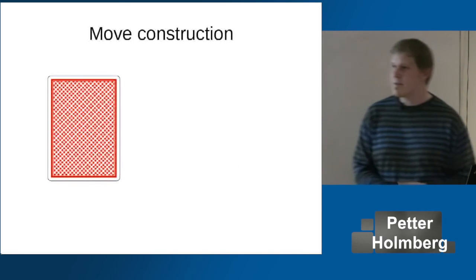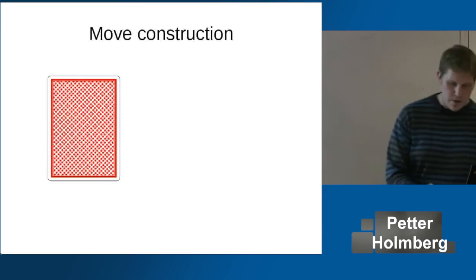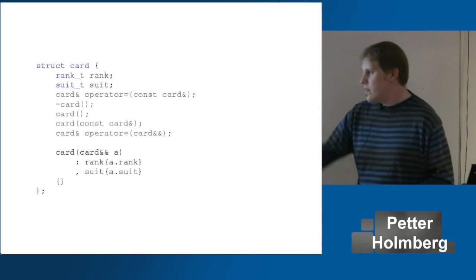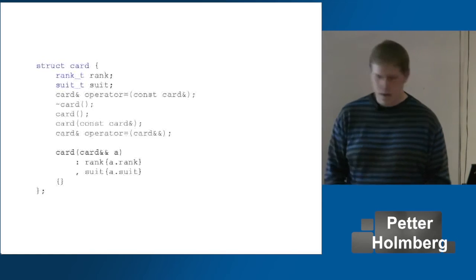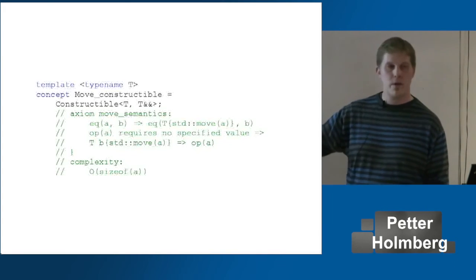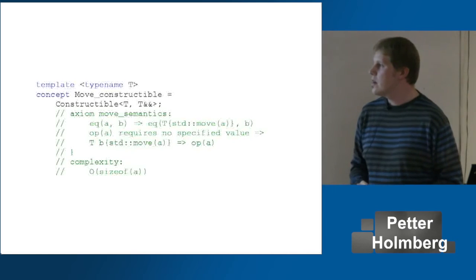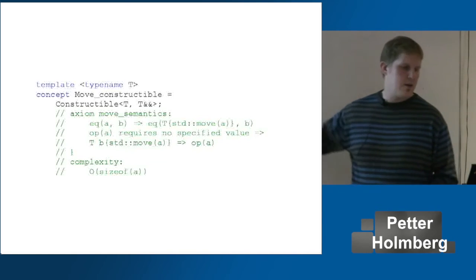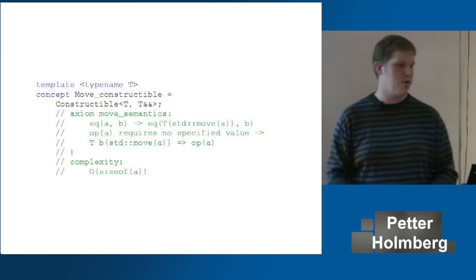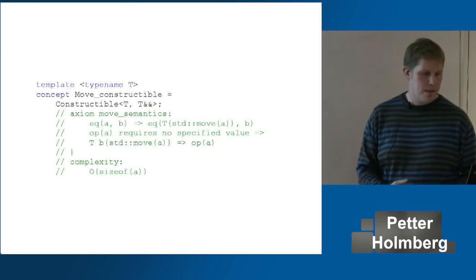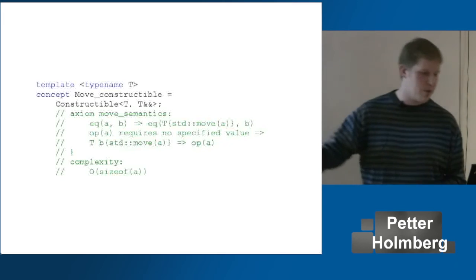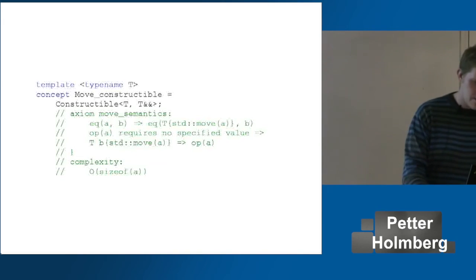So just one more left: the move constructor. Kind of the same as the copy constructor, except that we move instead of copy. In this case we just make a copy in the same way. To be move constructible, we should be constructible with an rvalue reference for the move constructor. Again, we have move semantics — an object move constructed out of A is, if A and B are equal, the move-constructed object is still equal to B. And we can call a function on an object that has been moved from, with complexity linear in the `size_of` A.